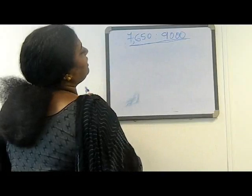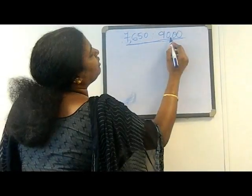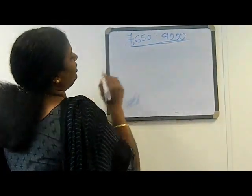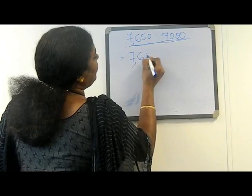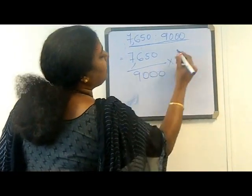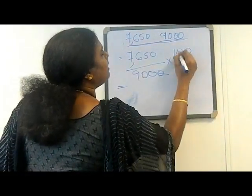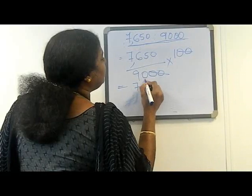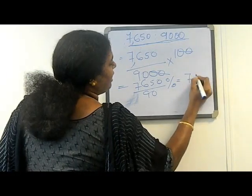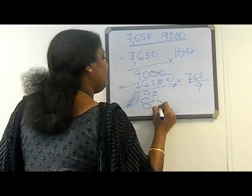Now we will compare Kishan's expenditure to his income. His expenditure was 7650 and his total income was 9000. We write the ratio 7650 to 9000, that means 7650 divided by 9000. Multiplying by 100 gives the percentage. Converting to lowest form: 7650 divided by 90, which simplifies to 765 divided by 9 — that means 85%.